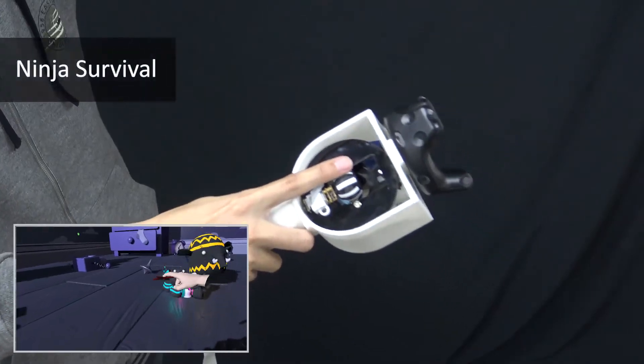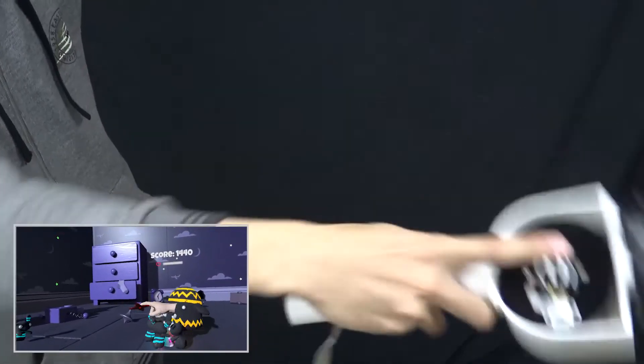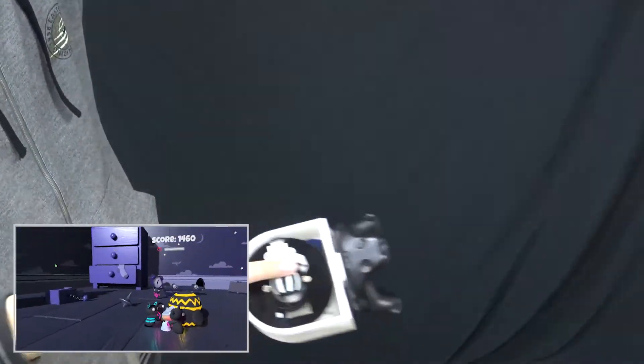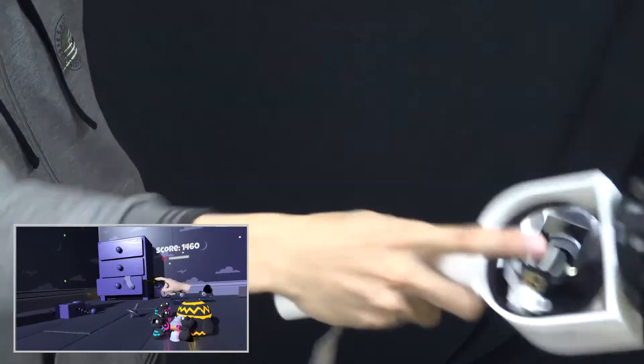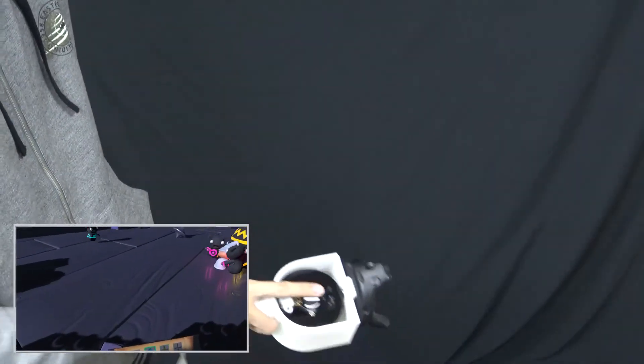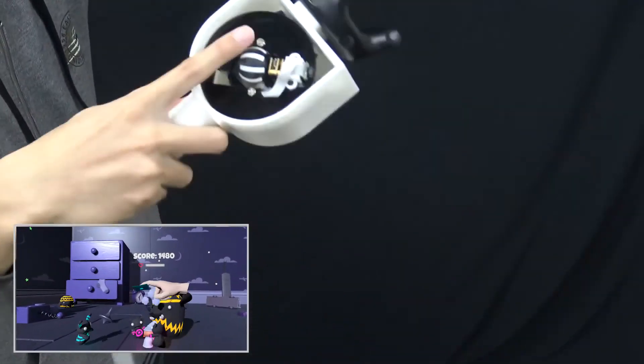Our third application is Ninja Survival. The user throws darts to the approaching enemies while perceiving short-term slips and rotational slips from Rolling Stone. Different slip profiles were designed for each type of dart. Thus, the user can discriminate the type of darts when throwing.